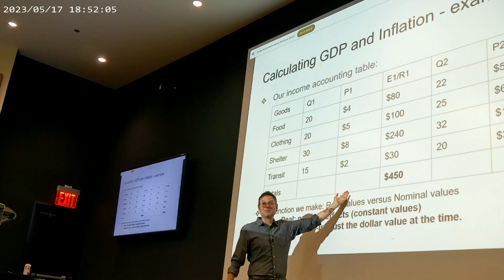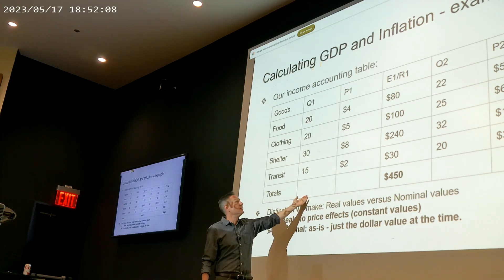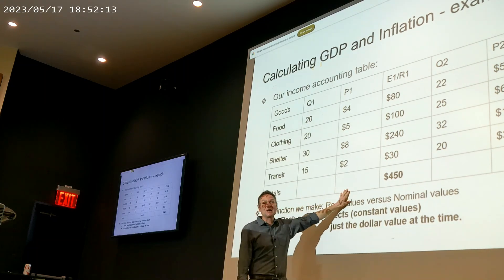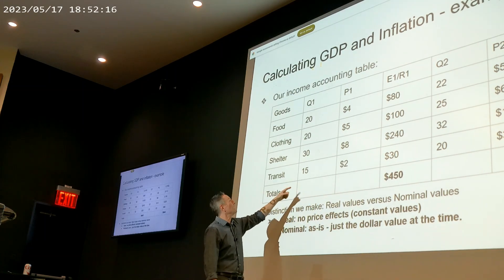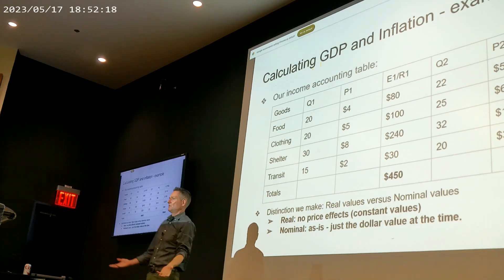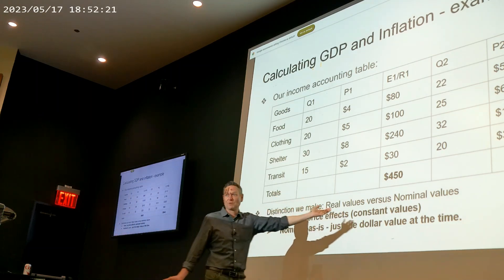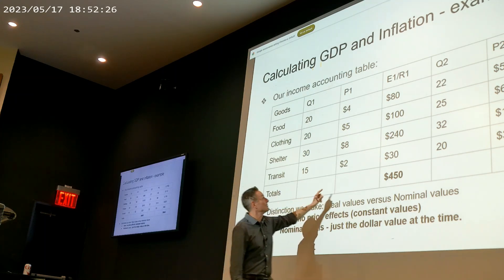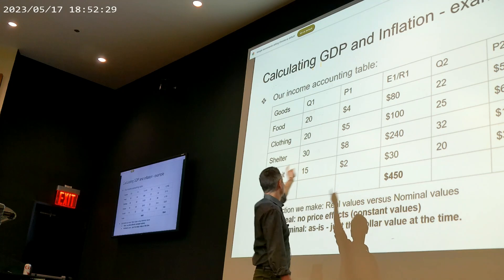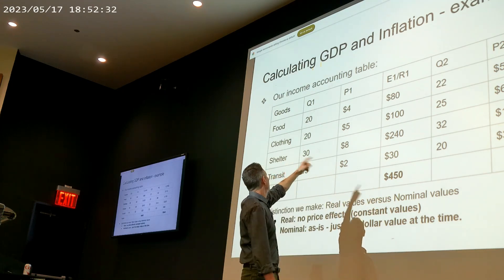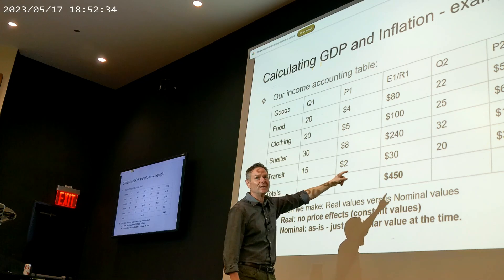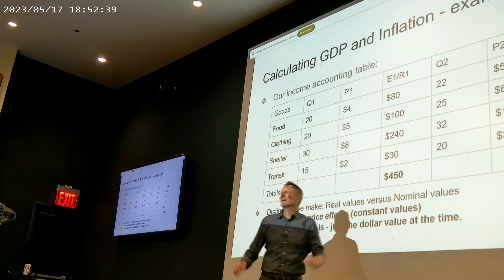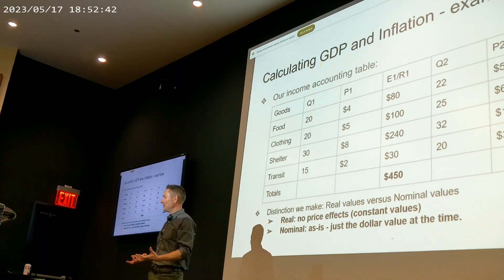The nice thing about dollars is that it gives us a way of transcribing these outputs into common units. How much food did you produce? 20 units — what does that mean? Well, $80 worth of food. So instead of thinking about raw numbers, we say we produced $80 of food, $100 of clothing, $240 of shelter, and $30 of transit. We add all those up and get $450 as the sum, and that gives us a measure of what is being produced in a given year.